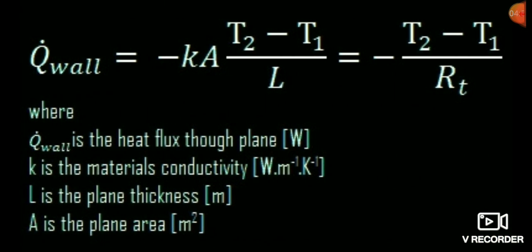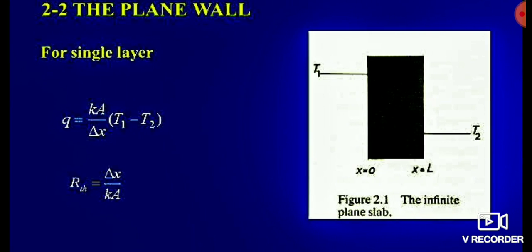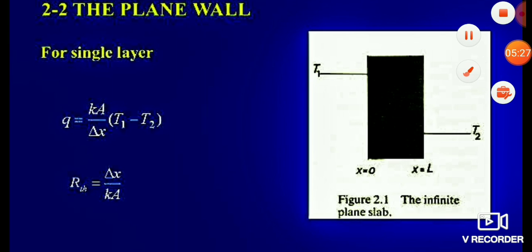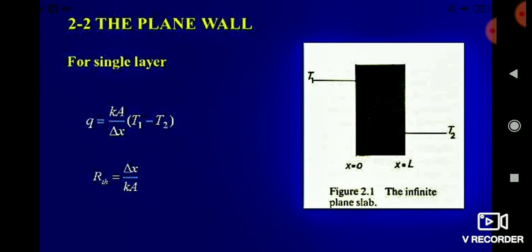Looking at the formula T2 minus T1 divided by R_t, when we substitute the value of R_t, we find that the thermal resistance R_th equals ΔX divided by KA. Here ΔX is the length of the conductor material and KA is the thermal conductivity multiplied by the cross-sectional area. This is the case of conduction in a plane wall.